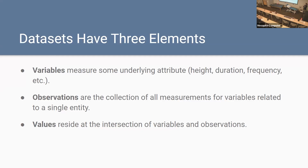If you think of a data set, you can break it down into three elements. Think of an Excel file: you have your variables along the columns, observations in the rows, and at the intersection of row and column you have your values. Variables measure some underlying attribute — for example, height, duration, frequency. Observations are the collection of all measurements for variables related to a single entity. Every value in your data set will be associated with one variable and one observation.